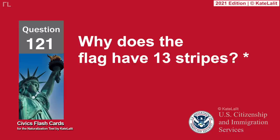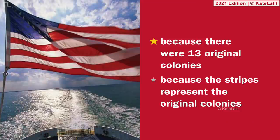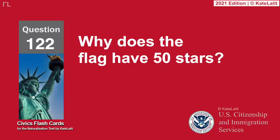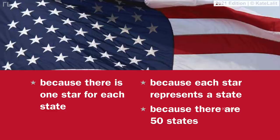Why does the flag have 13 stripes? Because there were 13 original colonies — the stripes represent the original colonies. Why does the flag have 50 stars? Because there is one star for each state — each star represents a state — because there are 50 states.